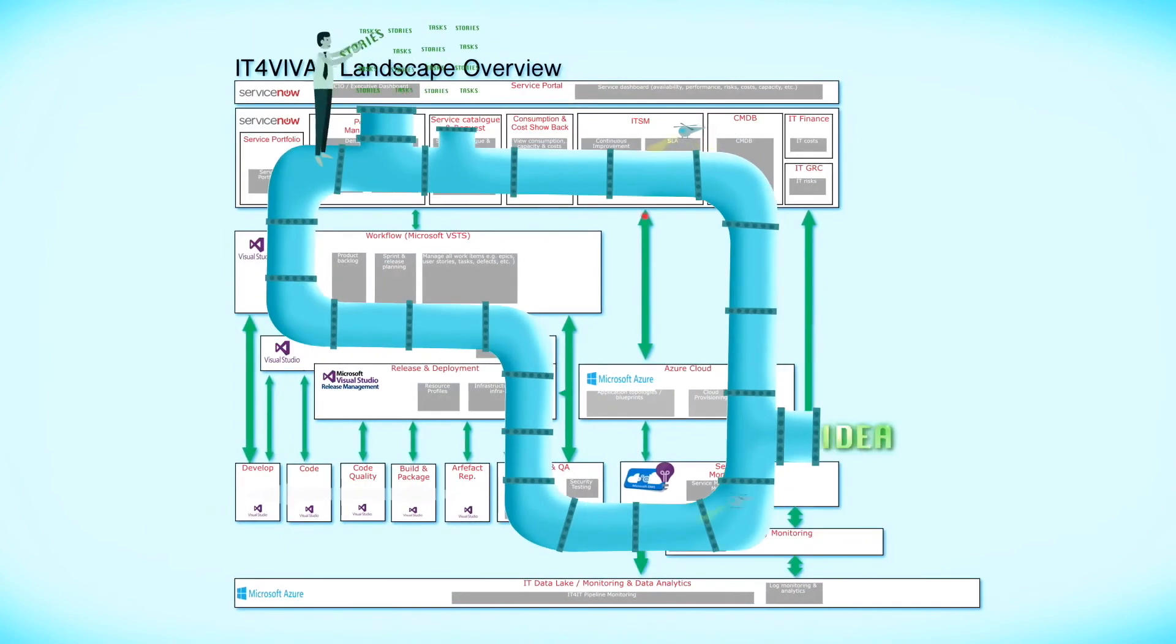This automated pipeline allows the IT organization to generate a significant output, while maintaining a high and constant level of quality. And all code, packages and software solutions are controlled through professional version management.